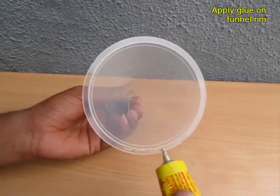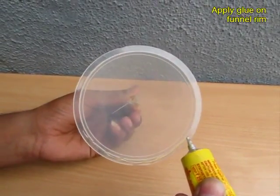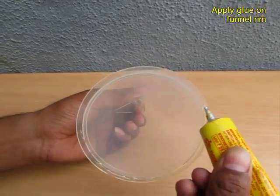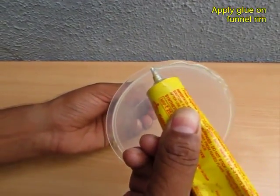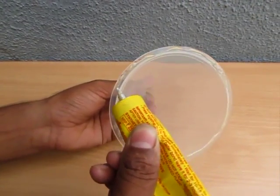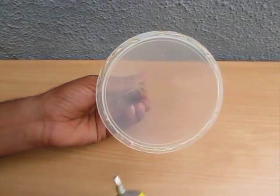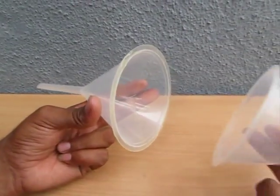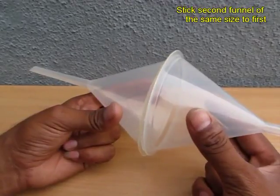Take a large funnel and apply rubber glue on its rim. Wait for a while for the glue to dry up, and then take another similar size funnel and stick the rims of both funnels to make a very special shape.